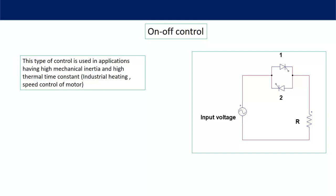Similarly, in industrial heating — suppose you want to heat a furnace up to 1000 degrees centigrade. By applying input voltage, the furnace is heated to 1000°C. Once it reaches that temperature, the supply is removed. As the thermal time constant is very large, the temperature will not instantly drop to a lower value. It is allowed to decrease up to an allowable limit, and then the input voltage is reapplied to heat the furnace again. This cycle continues and saves a lot of energy.